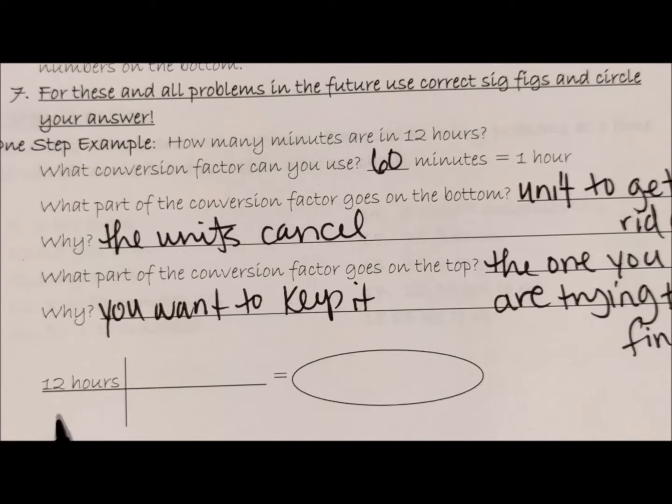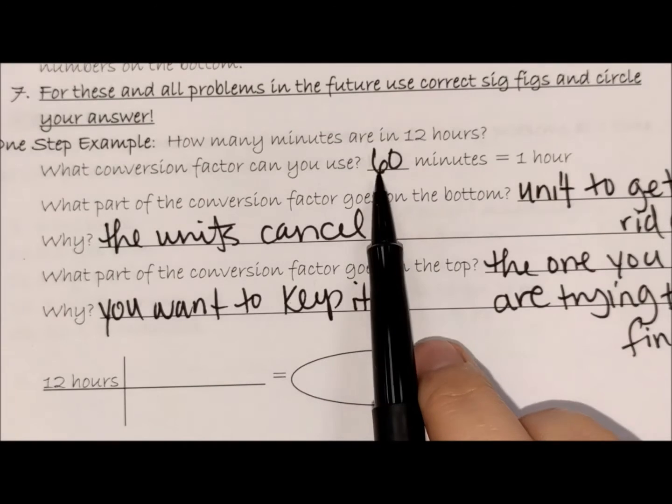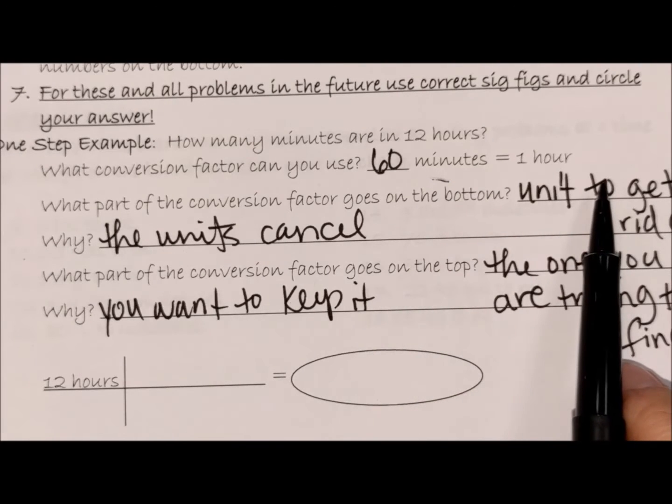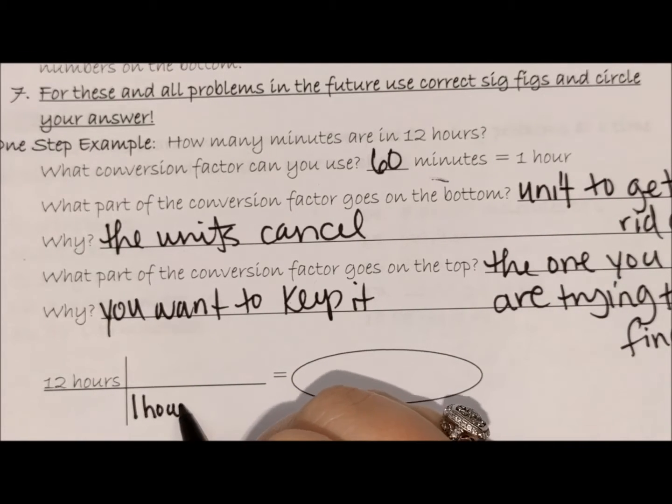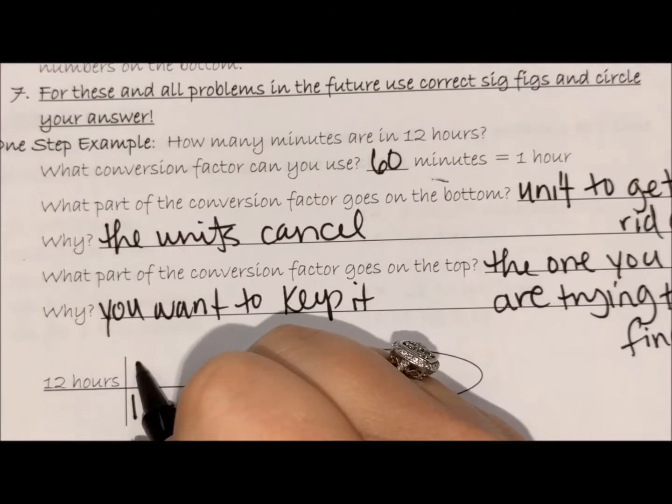So let's try this. We're going to convert 12 hours to minutes. The way that you do this is: I have the conversion factor 60 minutes is one hour, so the part I want to get rid of goes on the bottom and then the other part goes on the top.